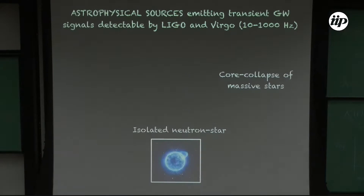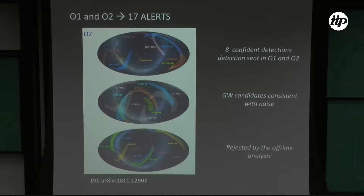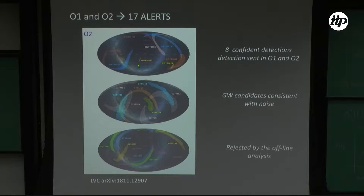These particular searches are model searches — we use matched filter techniques from data analysis. During O1 and O2 there were 17 alerts sent. O1 and O2 refer to the two scientific observational campaigns sustained by LIGO and Virgo: O1 was the first, roughly September 2015 through early 2016, and O2 ran from late 2016 through the end of August 2017. At the time there were eight confident detections, though we now know there are actually a bit more.